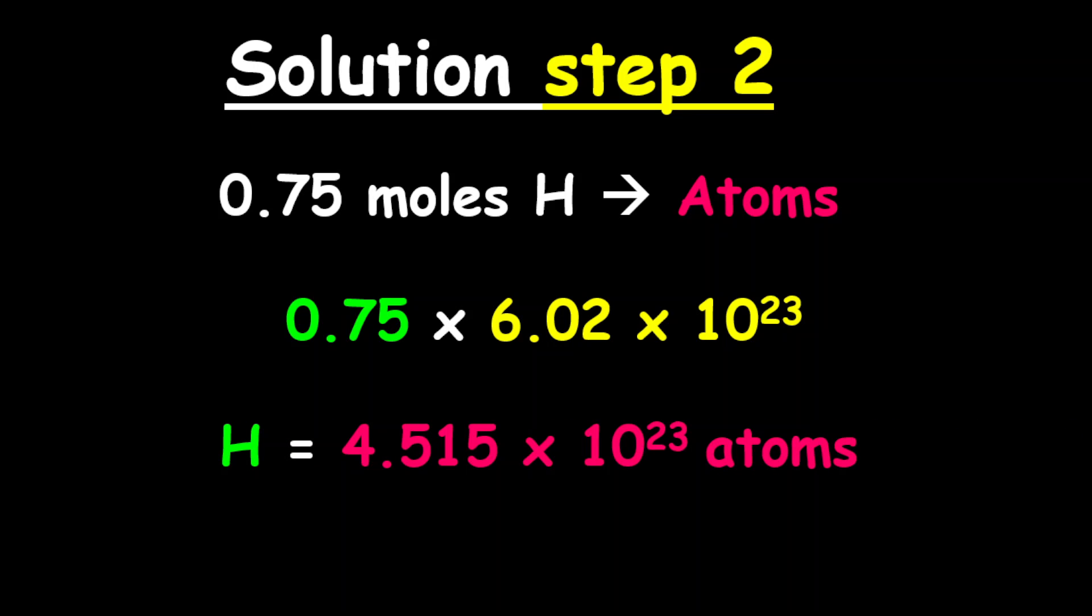Therefore, in 3 grams of CH4, there are 4.515 times 10 to the 23 atoms of hydrogen.